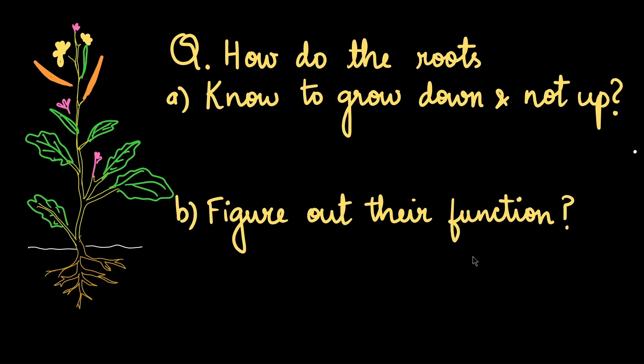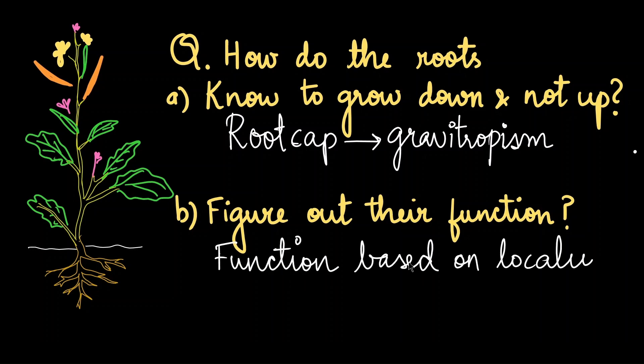So to answer our initial question, how do the roots know to grow down and not up? Well, the root cap because of its gravitropism helps the root to grow towards the soil and not away from it. And how do they figure out their function? So the function of the cells depend upon the location of the cells as they move from meristematic region to elongation region to maturation region. And once they reach the maturation region, they are able to perform their functions.